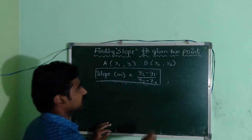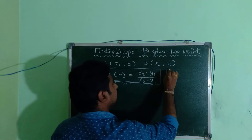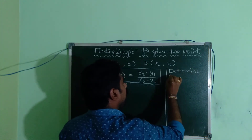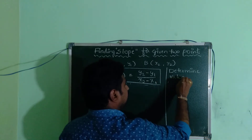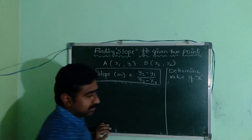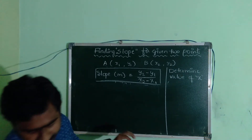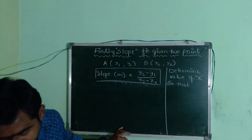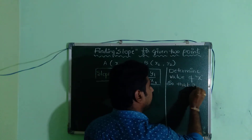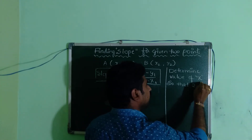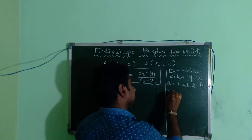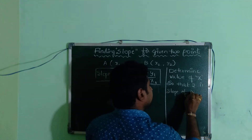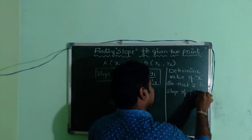Note the question: Determine the value of x, where 2 is the slope of points P and Q. Point P is at coordinates 2, 5 and point Q is at coordinates x, 3. The slope is already given as 2. We will substitute the coordinates into the formula and find out the value of x.